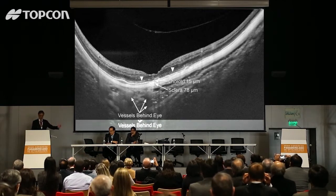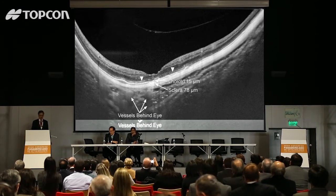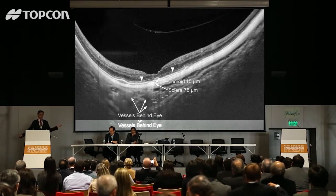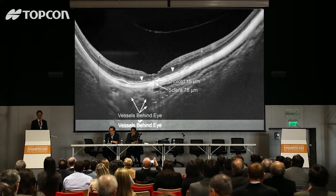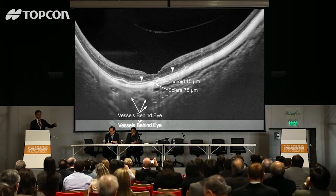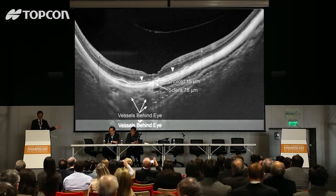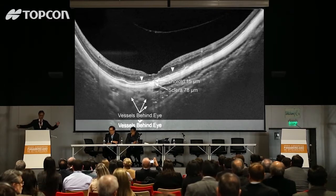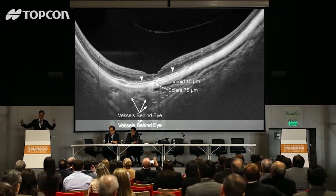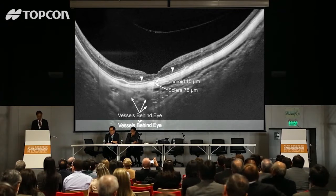Because we have such depth imaging capability, if we image a high myope we can see an amazing number of things. We can see the vitreous, the retina, and the choroid, which is very thin in a high myope. We can image the full thickness of the sclera and see that both the choroid and sclera are about a tenth as thick as in an emmetrope. We can even look behind the eye and see fat and large blood vessels.